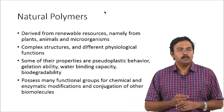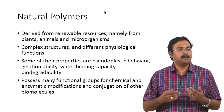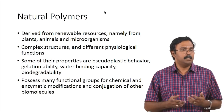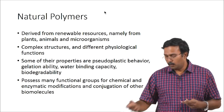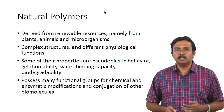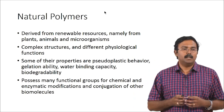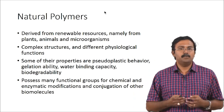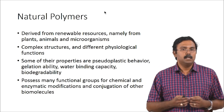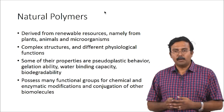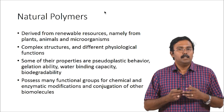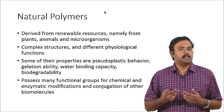We will talk about the next class of materials studied for scaffolds — the natural polymers. You have different types of natural polymers which are commonly used. We will talk about what they are and how they are used in tissue engineering. A natural polymer is something which is derived from renewable resources which could be plants, animals or microorganisms. They are complex structures with different physiological functions.